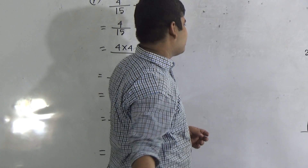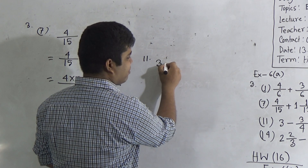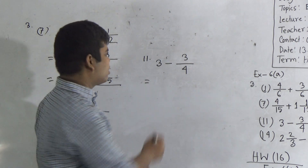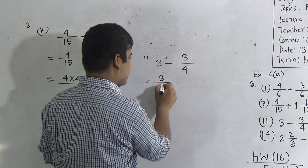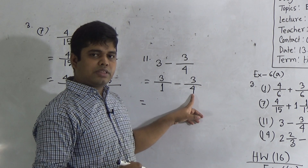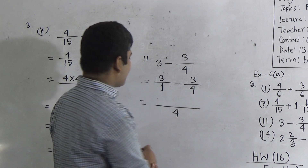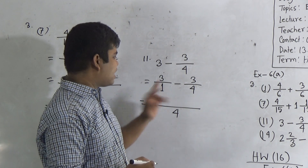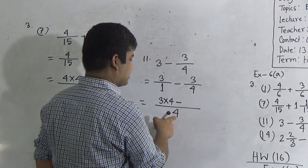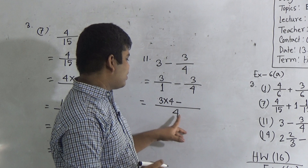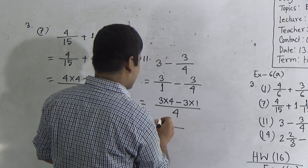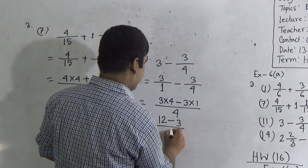First of all, we write the question. Here you notice: 3 minus 3/4. Dear student, we know that every whole number has a denominator of 1. So we rewrite 3 as the fraction 3/1. So we have 3/1 minus 3/4. Now we find out the LCM of 1 and 4. The LCM of 1 and 4 is 4. Now we divide 4 by 1 and get 4, and that 4 is multiplied with 3 — giving 3 times 4. This minus sign is here. After that we divide the LCM by the denominator of the second fraction: 4 divided by 4 gives 1, and that 1 is multiplied with 3.